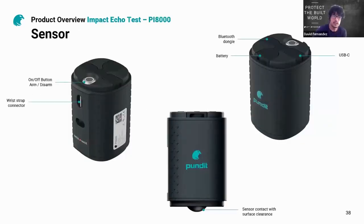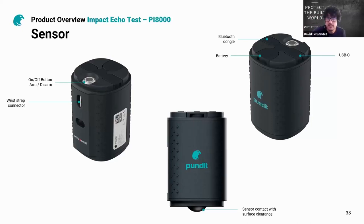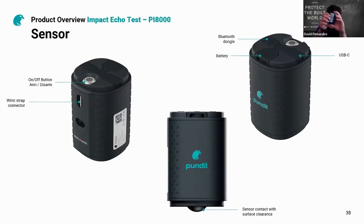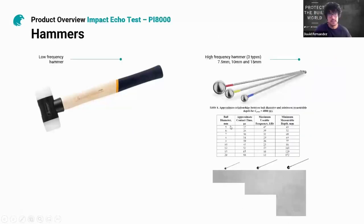We have three impactors. The smaller one is useful for testing thinner elements and detecting superficial defects because it creates a high frequency wave with less penetration but more accuracy. The bigger impactor provides a lower frequency wave with more penetration but less accuracy, making it useful for testing thicker elements.